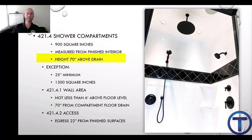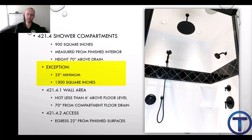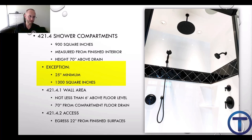The height of the finished surface has to be at least 70 inches above the drain. There is an exception: if you have an awkward space, the minimum width can be 25 inches instead of 30, but then the square inch requirement goes up to 1,300 square inches — a larger rectangle that gives shoulder space. So it's a larger square inch area if dimensions are less than 30, and they can't be any more narrow than 25 inches.